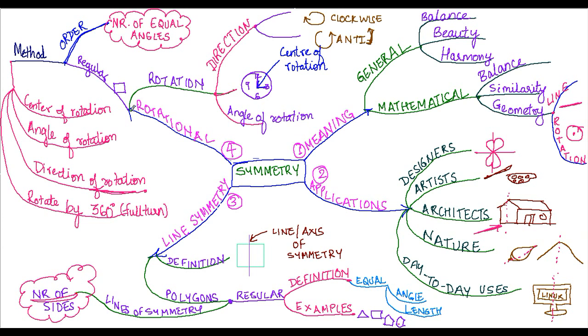We studied the rotational symmetry for regular polygons. The method for finding out the rotational symmetry was first identify the center of rotation, then identify the angle of rotation. The angle of rotation should be the minimum angle by which if you rotate the image it still looks the same.